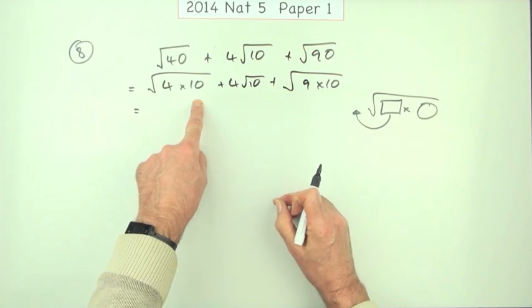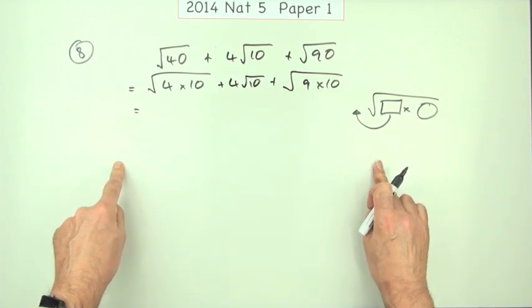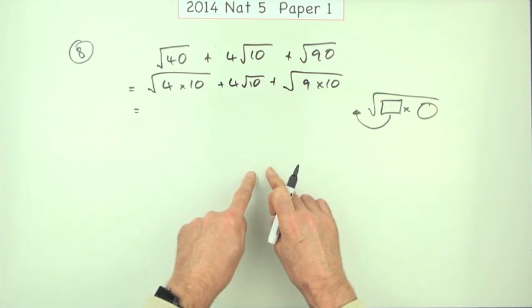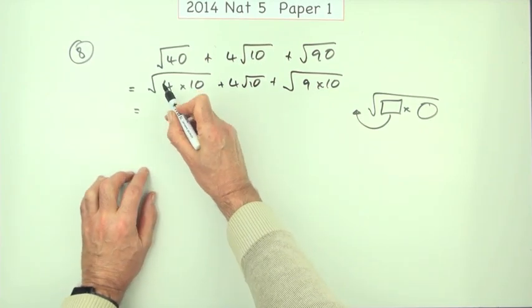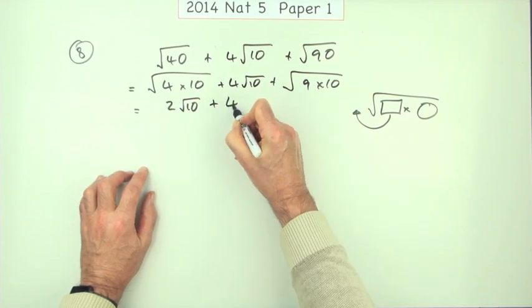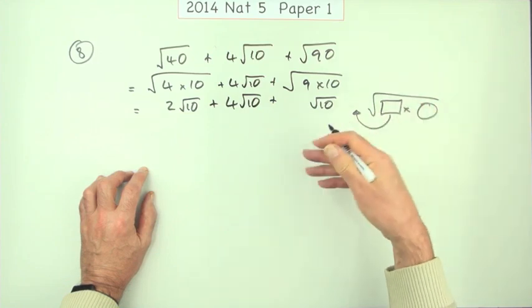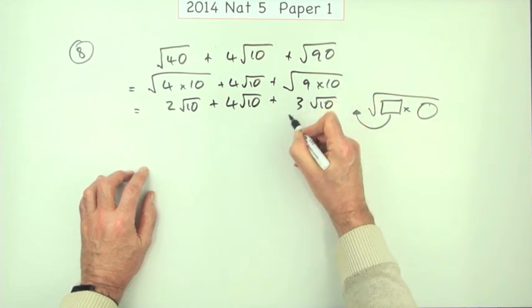Now I'm using that property of square roots. The product of the square roots is the same as the square root of the product. So that must be the same as the square root of 4 times the square root of 10, and the square root of 4 is 2. That's the same as the square root of 9 times the square root of 10—nothing to do with 10, you're stuck. But the square root of 9 is 3.